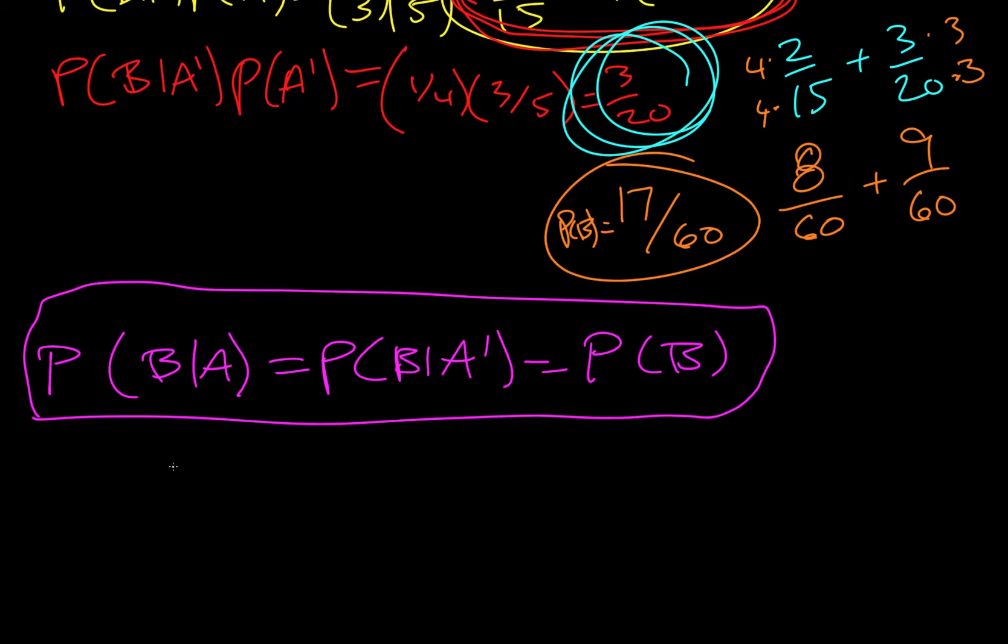So if we look at P of B is equal to, and I'll put a question mark because we don't know if it's equal to, P of B given A.